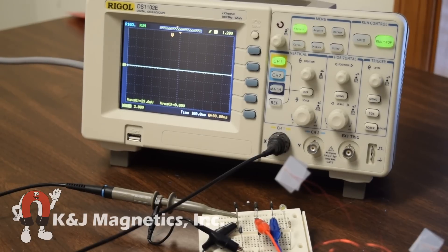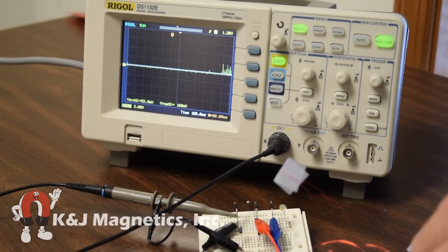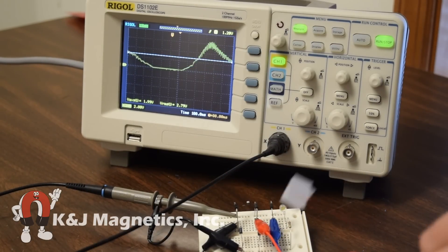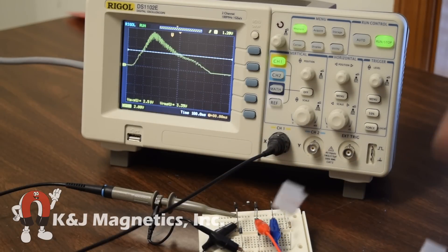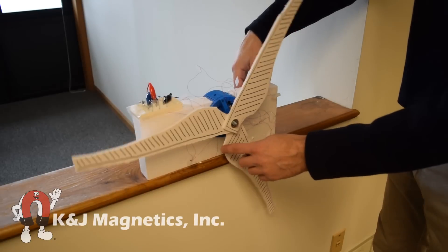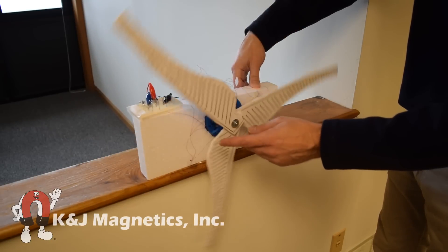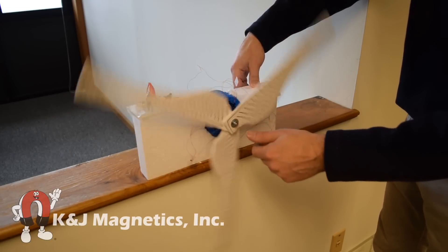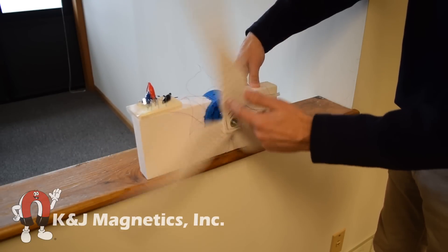When we spin it by hand, we get three, four or five volts. It lights up an LED and shows a clearly visible trace on the oscilloscope. If this works this well spinning it by hand, we should be able to get a decent amount of power in the wind with an actual wind turbine.